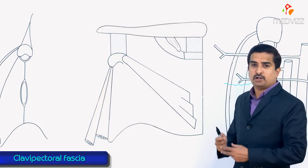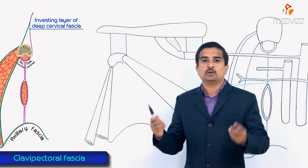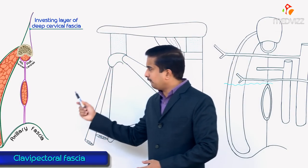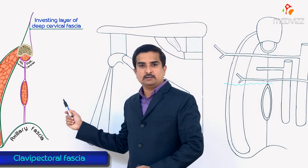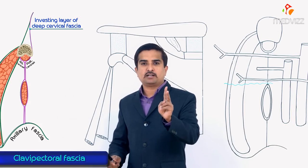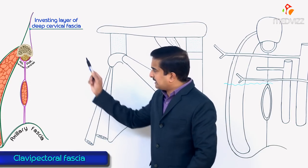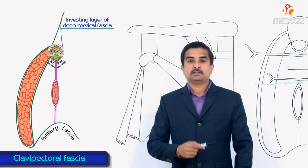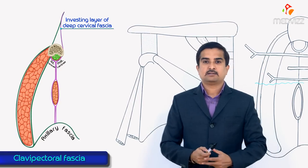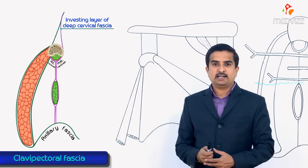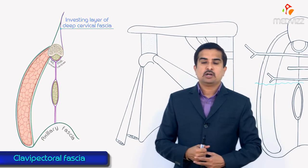One important point to note is that the clavipectoral fascia encloses two important muscles: the subclavius muscle and the pectoralis minor muscle.